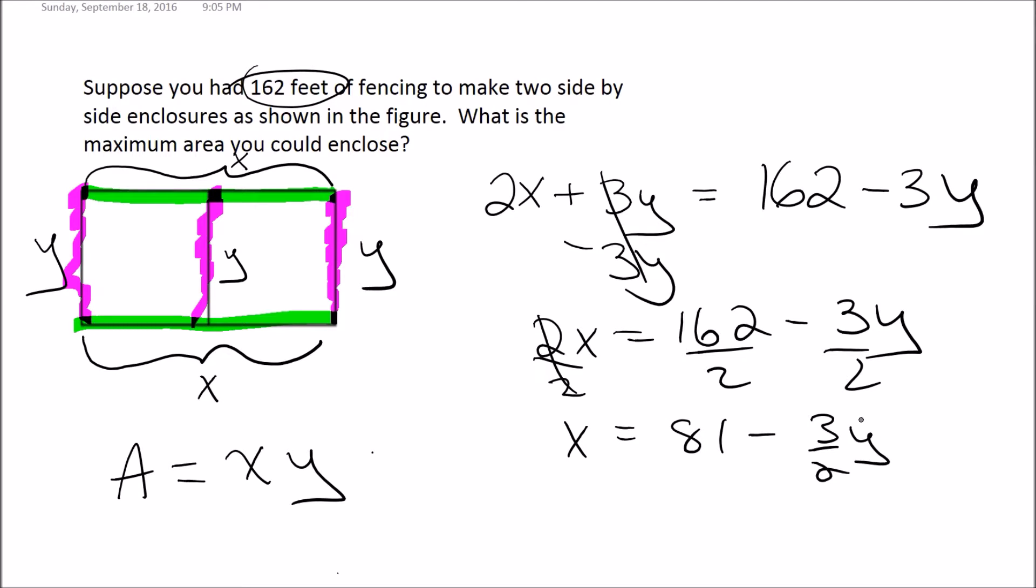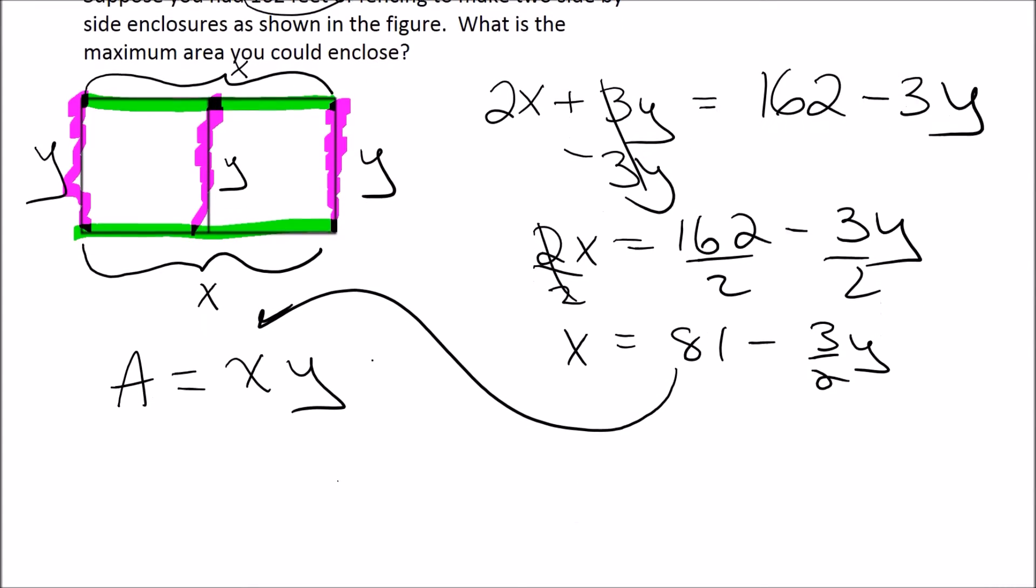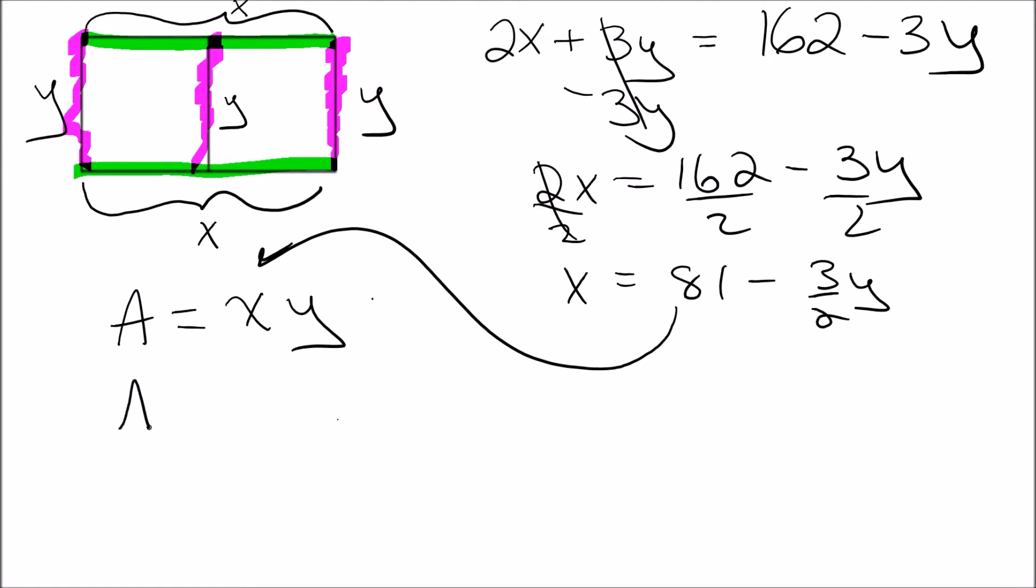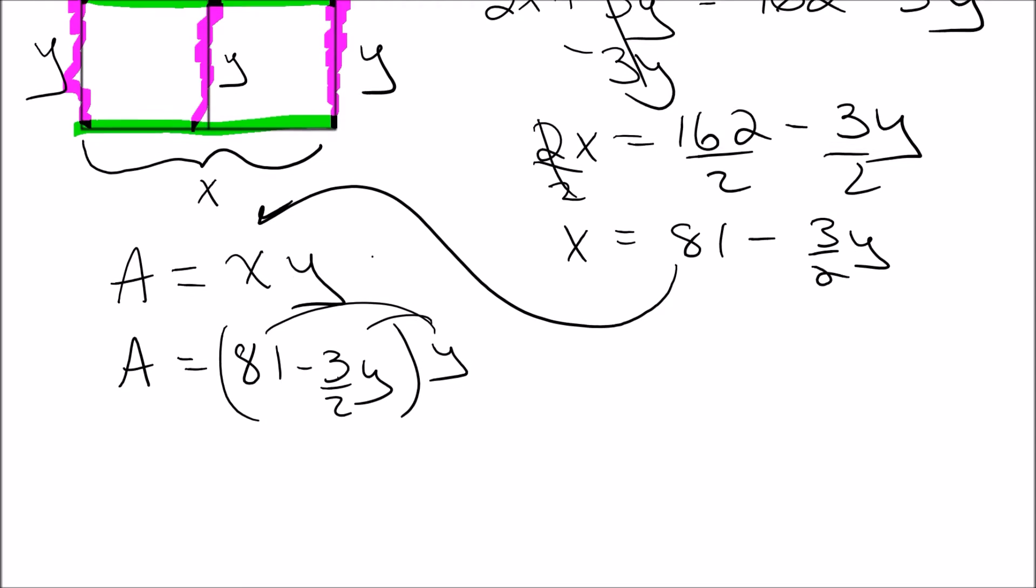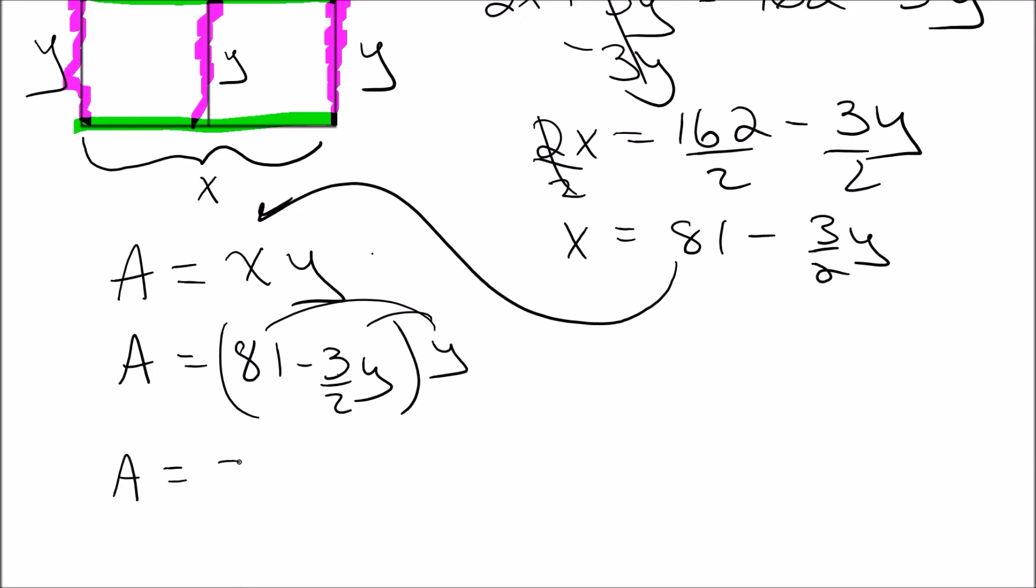So I'll end up with X equals 81 minus three halves Y. I'm going to take that and substitute it for my equation for X over here. So the area is 81 minus three halves Y times Y. Distribute that Y through and we'll get that the area equals 81Y minus three halves Y squared.